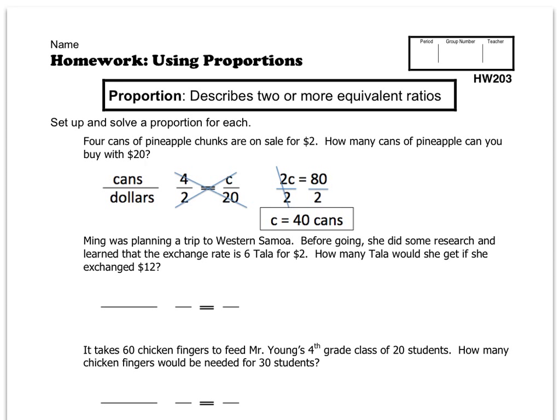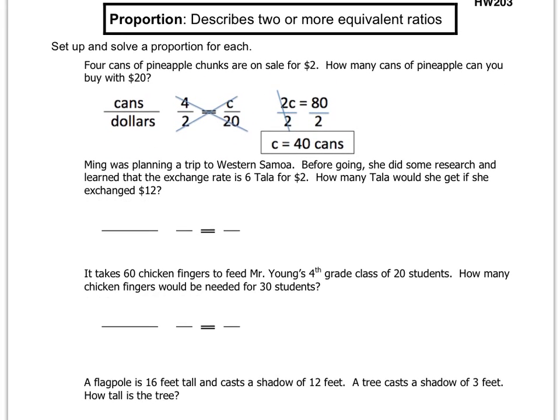To solve that one-step equation, we want to get C all alone. We want to get rid of the 2 attached by multiplication, so we divide both sides by 2. Because it is an equation, we have to be fair and divide both sides. The 2s cancel to 1, leaving just C. On the right side, 80 divided by 2 — half of 80 is 40 — so we can buy 40 cans.